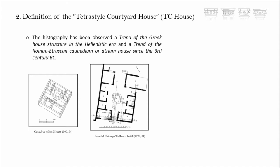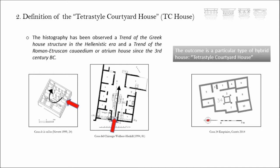We could say that the peristyle or courtyard house in the Hellenistic world tends to a very centripetal plan or structure, as you can see in this peristyle match — the House of the Colline in Delos — which has a very centripetal distribution of rooms around the peristyle. However, the most famous structure of the Roman atrium house is more axial and more symmetrical, as you can see in this example of the House of Quirigo in Pompeii. The outcome is a very particular type of hybrid house: the tetrastyl courtyard house has a very centripetal distribution but with an atrium as the uncovered central place.